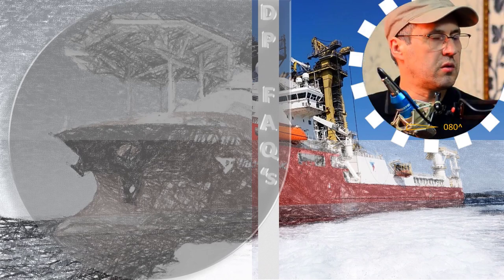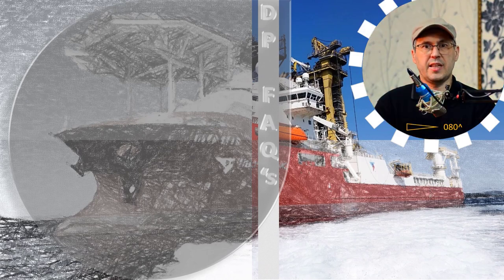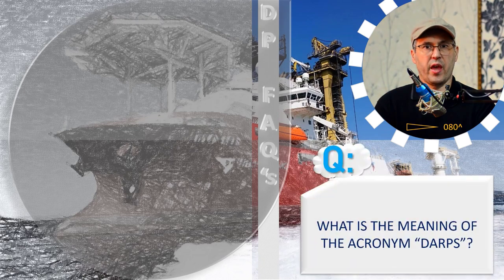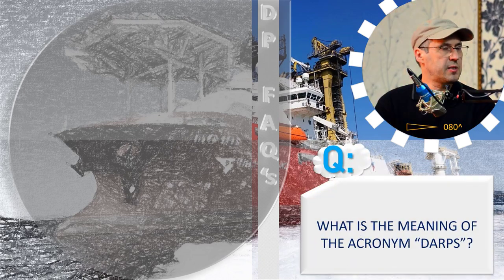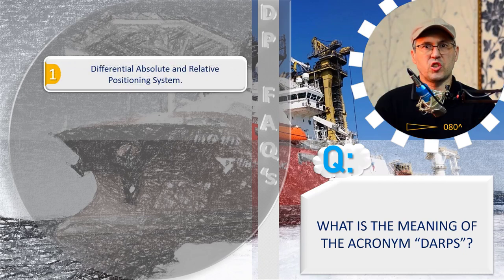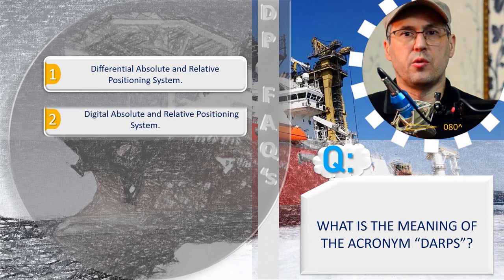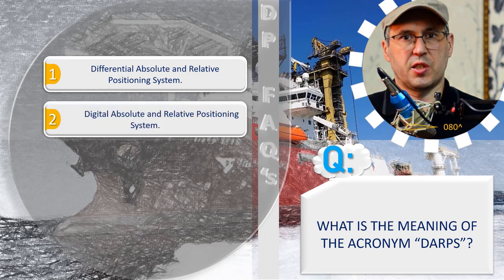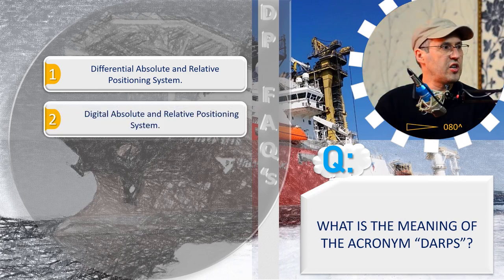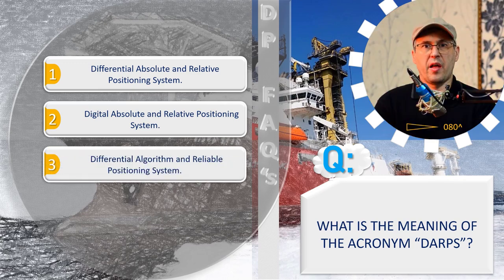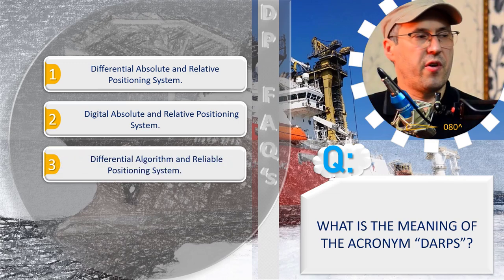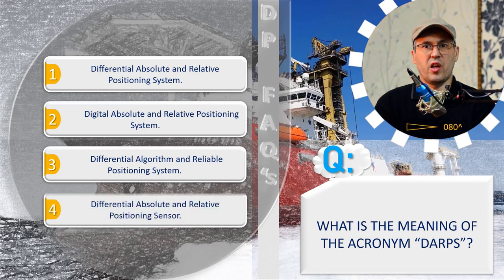What is the meaning of the acronym DARS? Any ideas? Variant one: Differential Absolute and Relative Positioning System. Variant two: Digital Absolute and Relative Positioning System. Variant three: Differential Algorithm and Reliable Positioning System. Variant four: Differential Absolute and Relative Positioning Sensor.